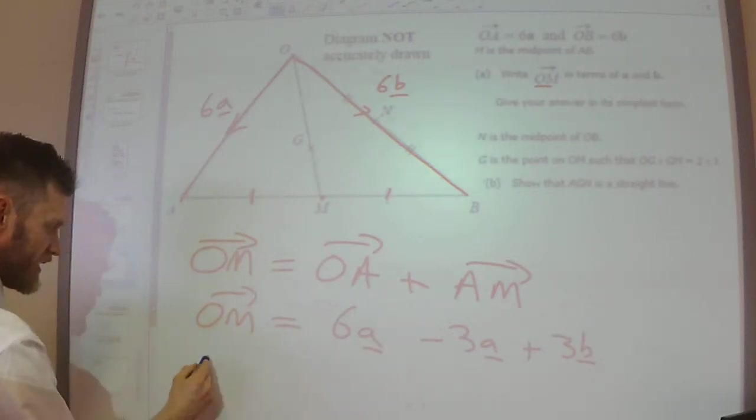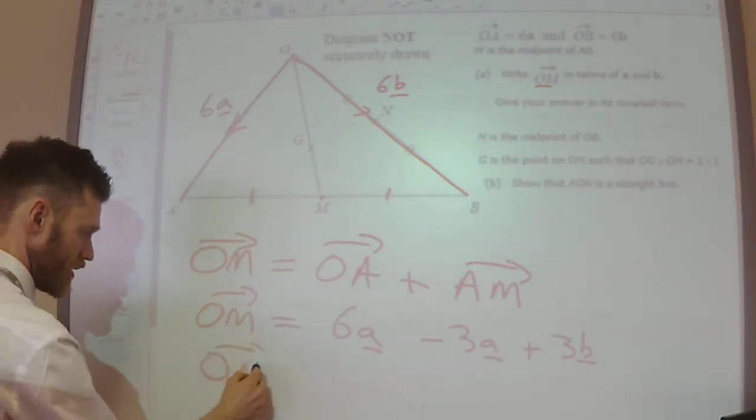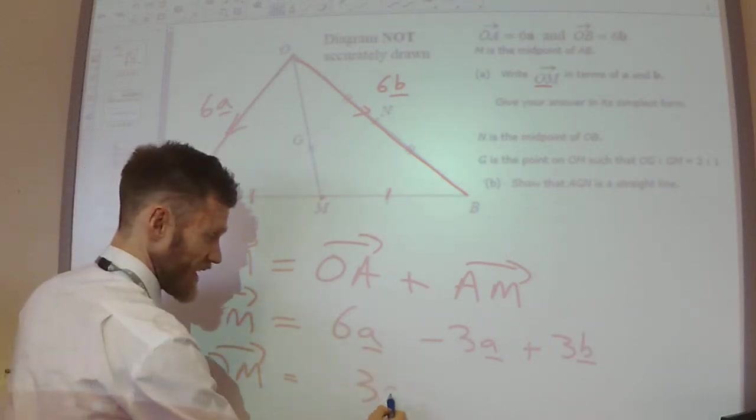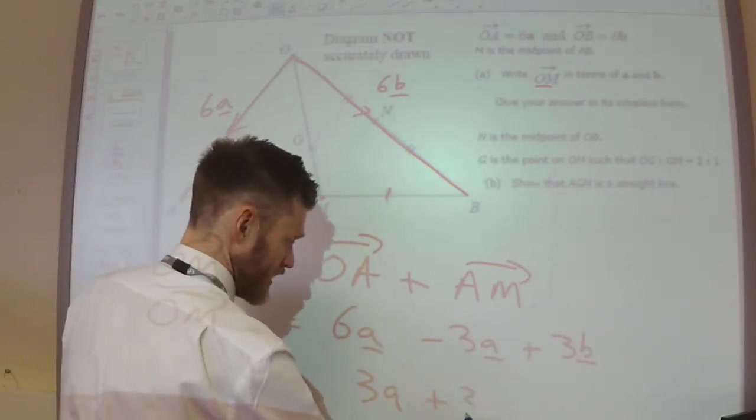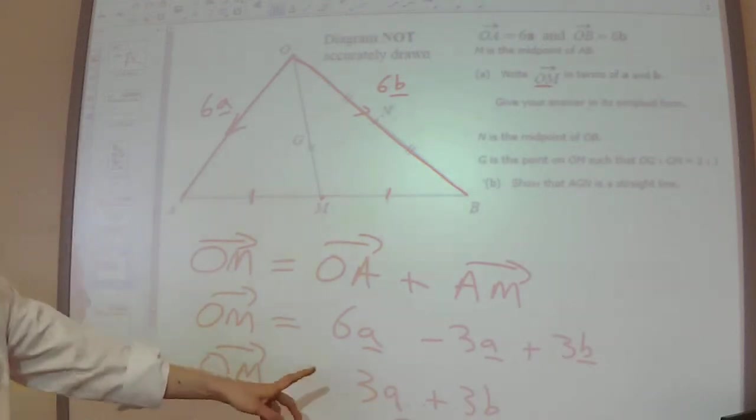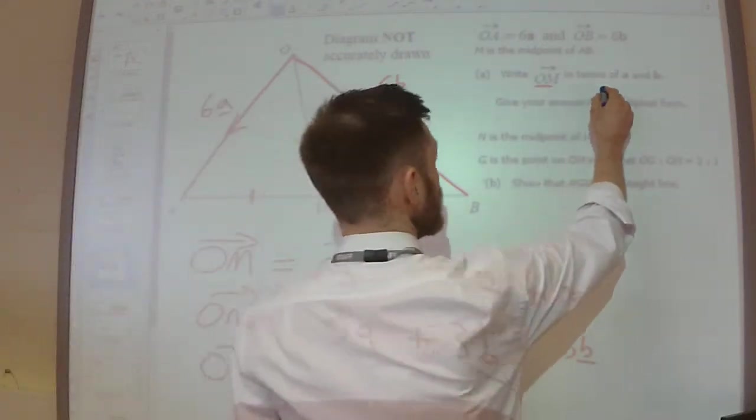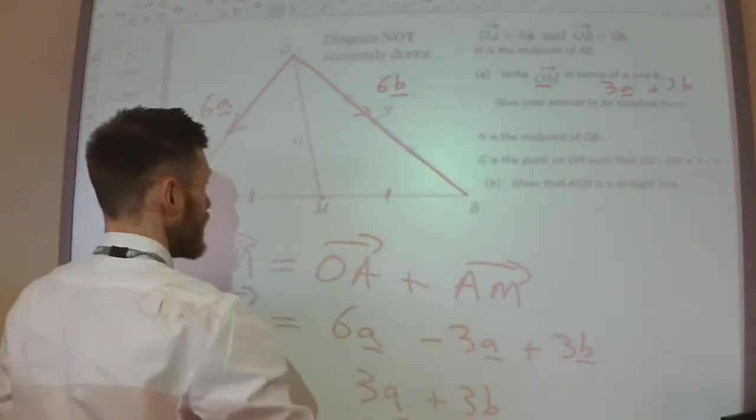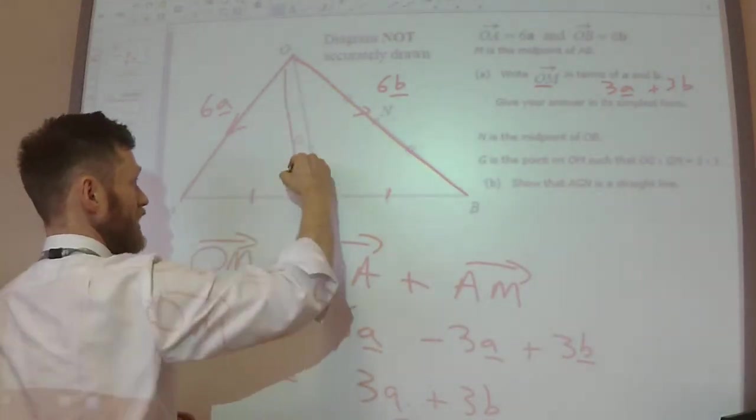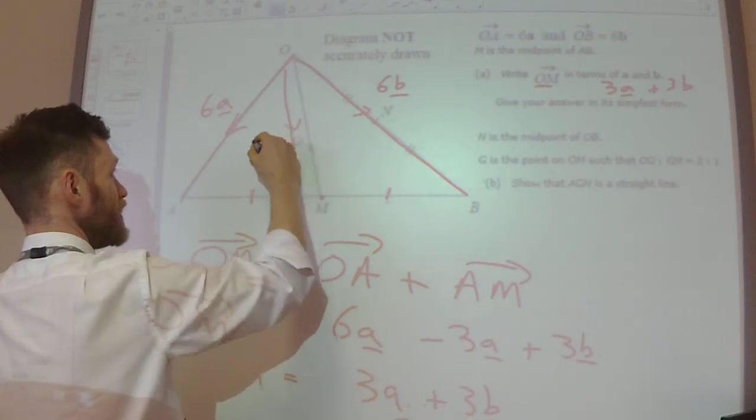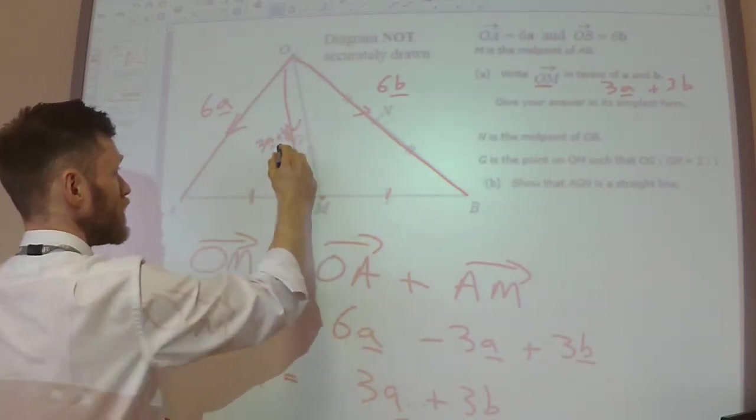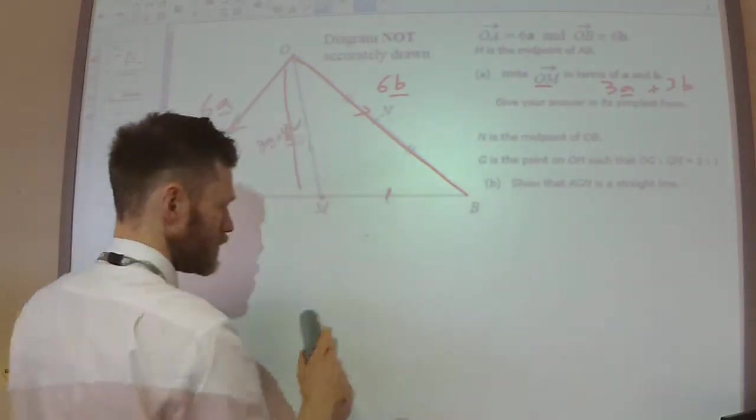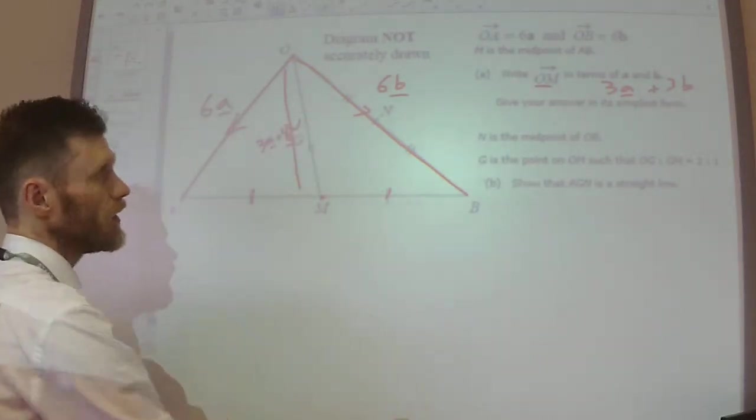And we can simplify this vector a little bit. So O to M, because the 6a take away the 3a is 3a, and the 3b is there. So that's my answer to O to M. This is 3a plus 3b. And I could mark that on my diagram here, this vector here.